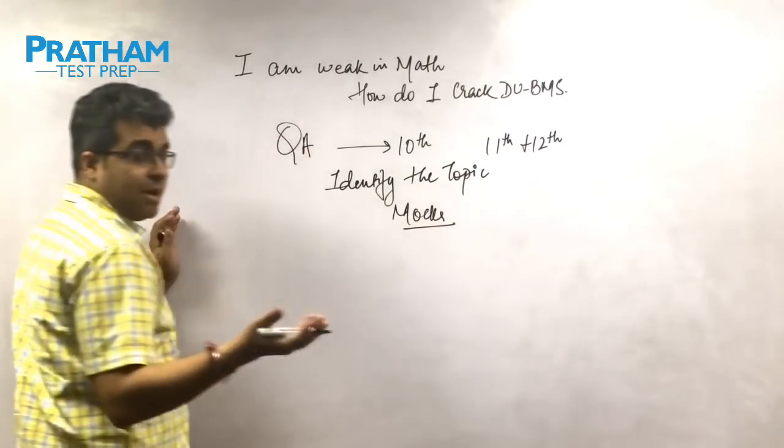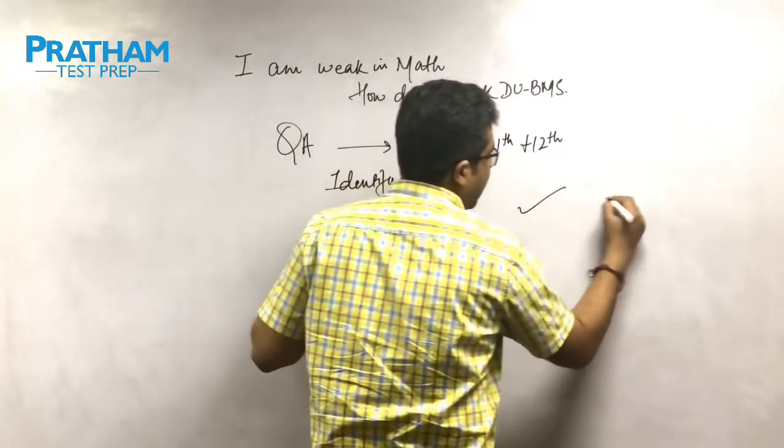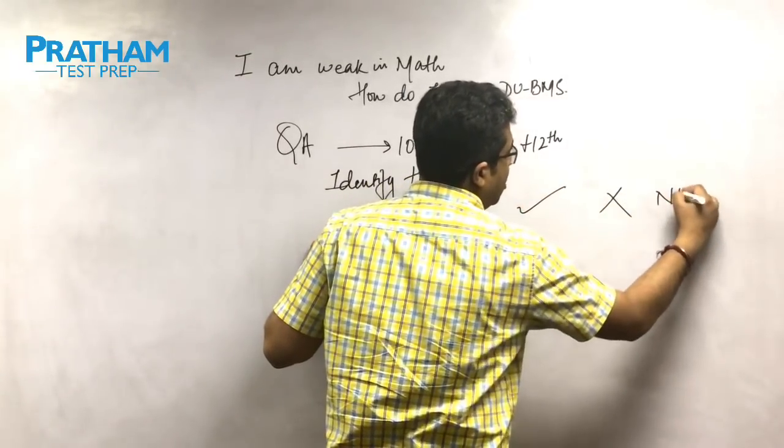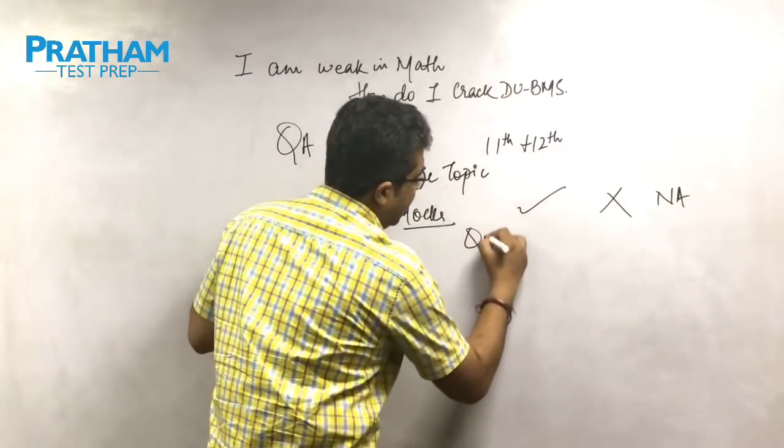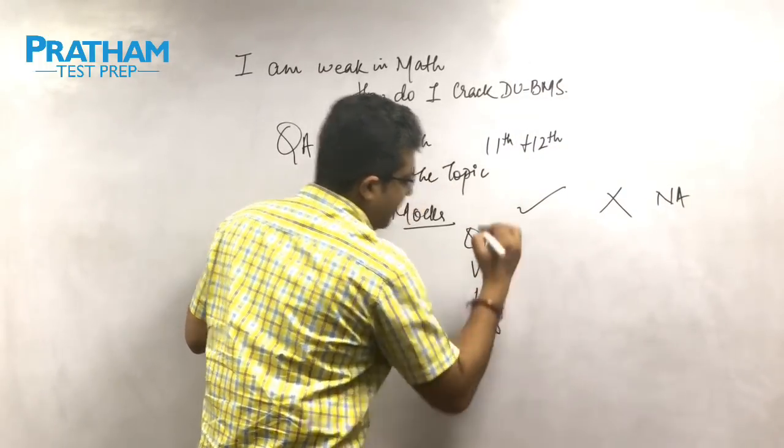Now the first primary level of analyzing the mock is how many corrects did I get, how many wrongs did I get, and how many non-attempts did I do in each section: quant, verbal, logical reasoning, and awareness.